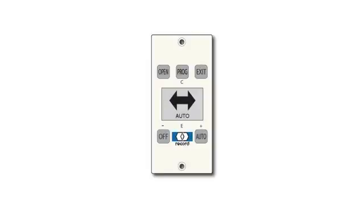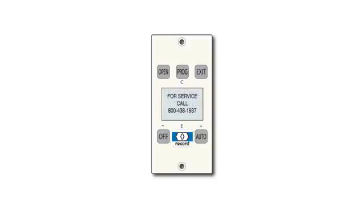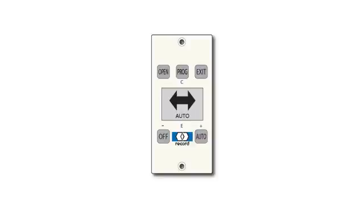The Smart Panel is also designed to provide store managers with vital information about the door. Pressing and holding the hidden button behind the Record logo for approximately two seconds will display the current firmware version on the door's control. Pressing a second time will display the telephone number of an authorized service provider, along with the last error, if any. Pressing a third time displays a graph representing the current maintenance cycle. The display will return to the normal screen after any button is pressed or after waiting 20 seconds.